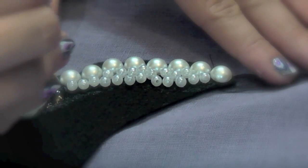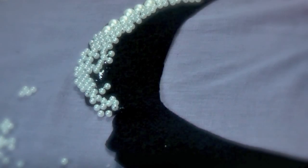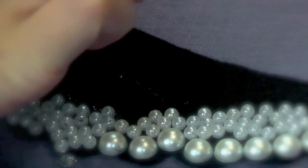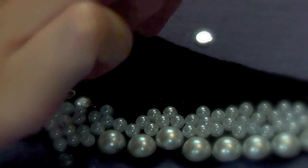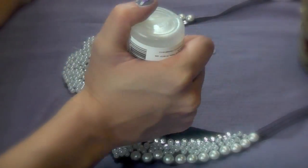If you're using smaller embellishments like I did here, I would suggest just putting the glue directly on the felt and then sprinkling the embellishments on top because it will literally take you forever to apply them one by one.